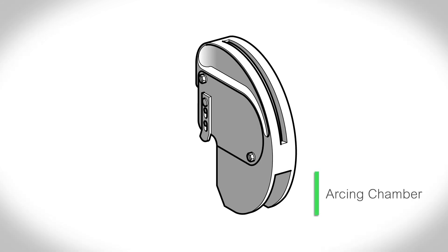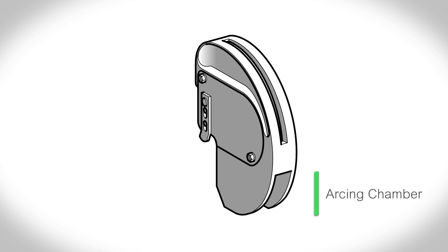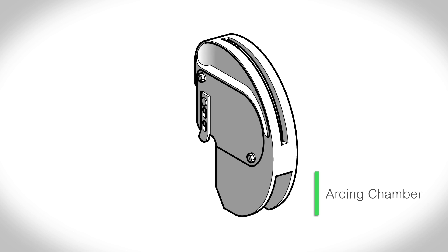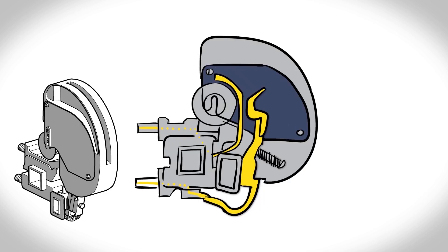In TASIS-B contactors, the arc develops in an arcing chamber. This chamber is a kind of electrically insulated and high temperature resistant cap. It covers the fixed and mobile contacts of each pole.